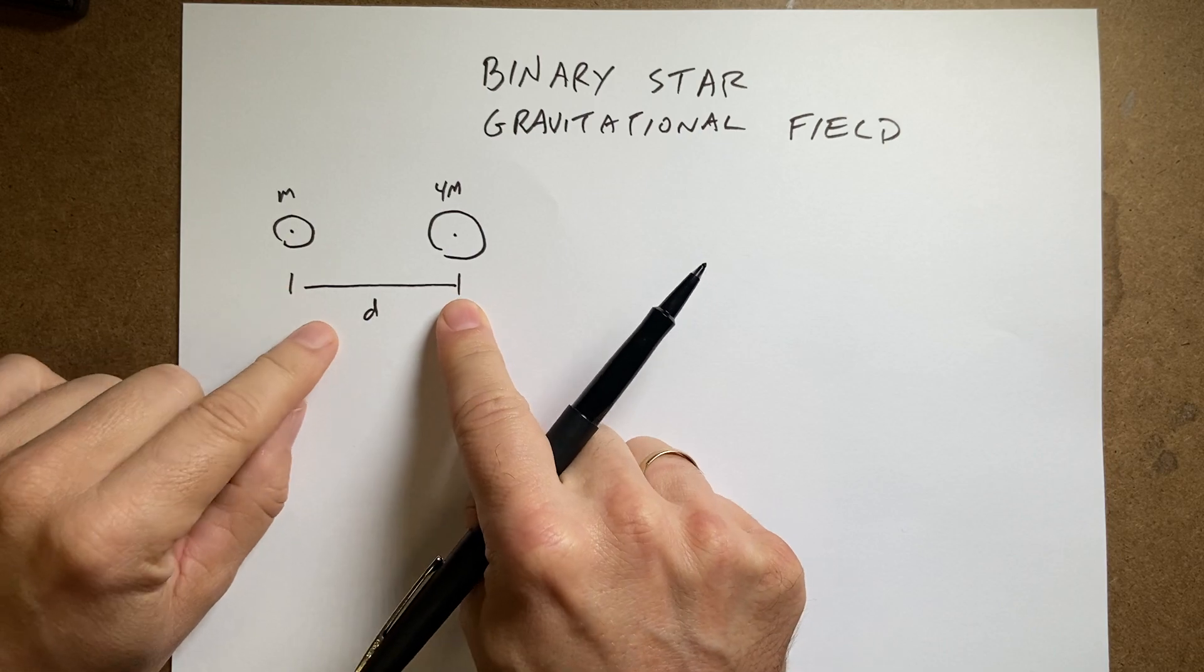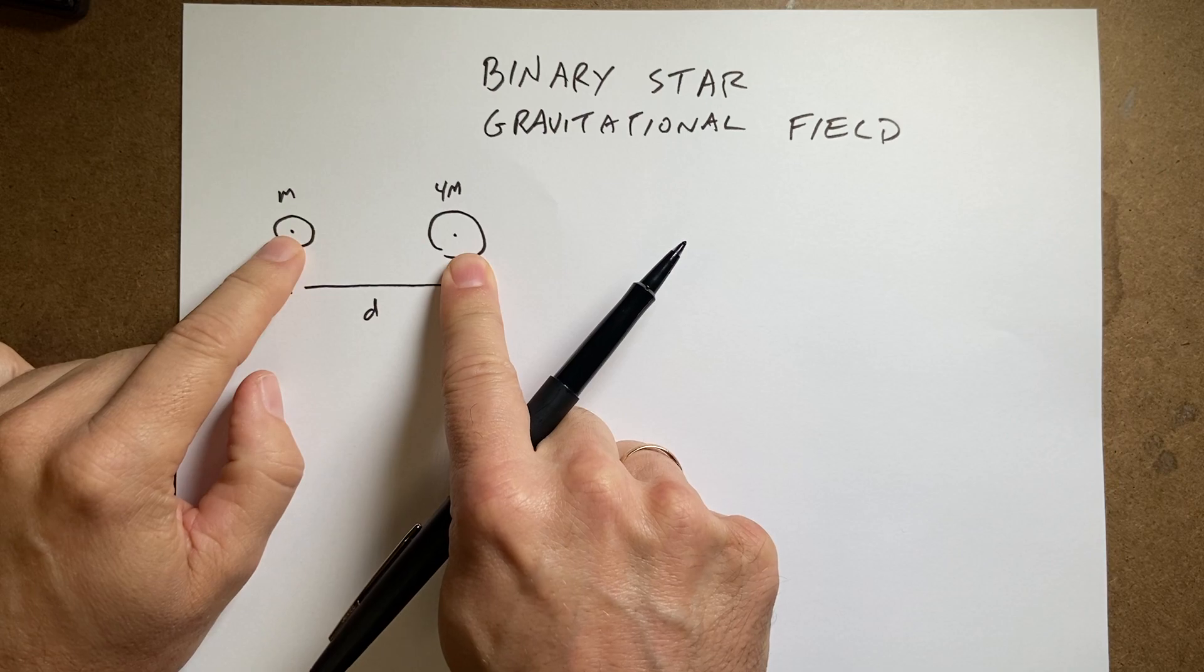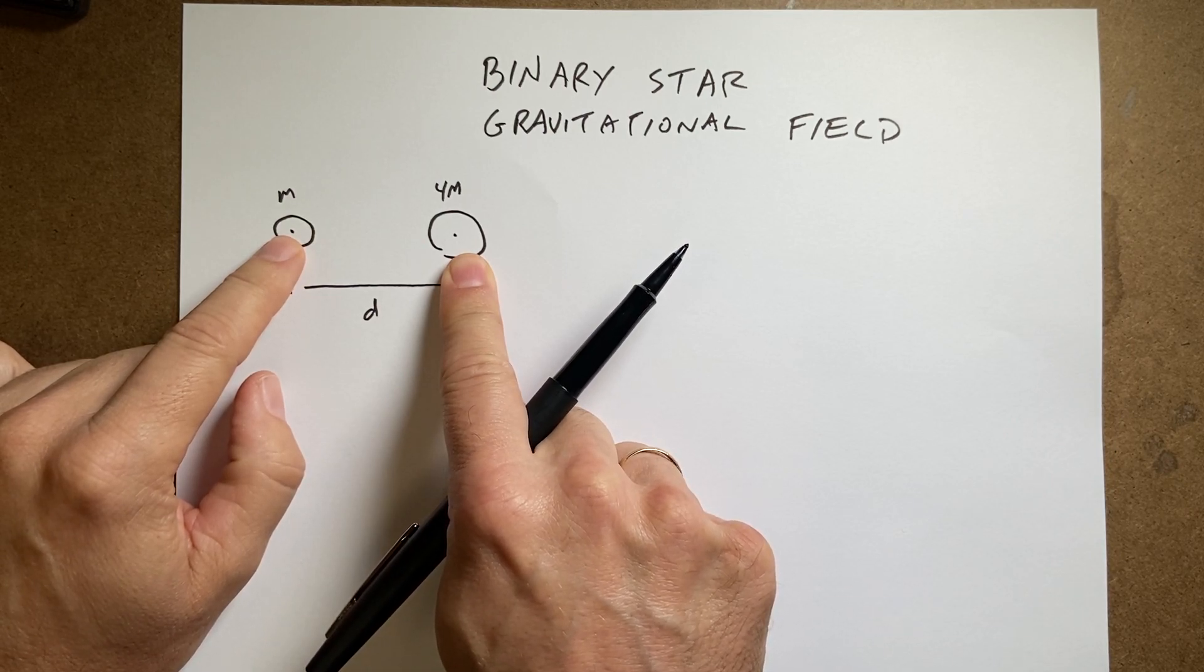Their centers are a distance d apart, one is a mass m, one is four times mass 4m. And so the question is, where is the gravitational field, if any place, zero?